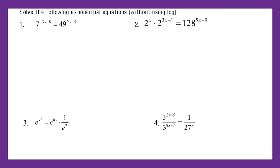Let's go to number one. We have 7 to the negative 3x minus 8 power equals 49 to the x minus 5 power. So we try to make the same base. Definitely 49 I can turn into 7 squared, so I would do that.